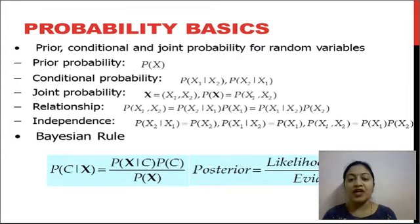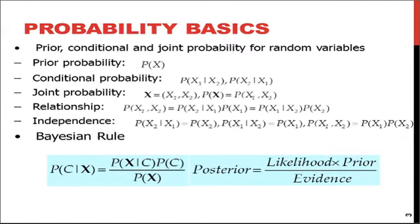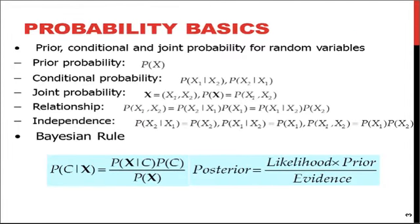Here we have the posterior probability, which is based on the likelihood probability, the evidence probability P(X), and the prior probability P(C). So we can find the posterior probability P(C | X) based on the prior, likelihood, and evidence probabilities.